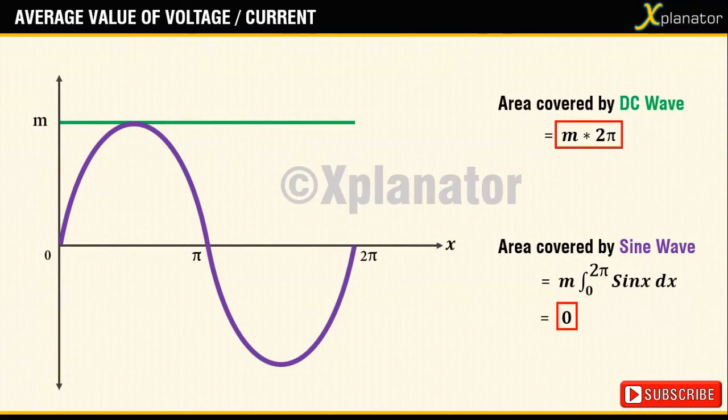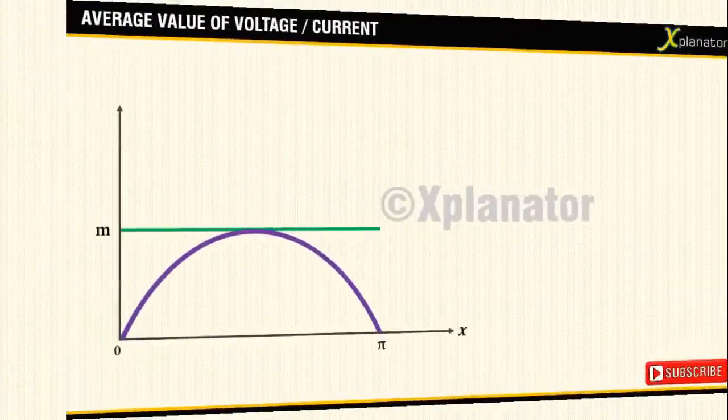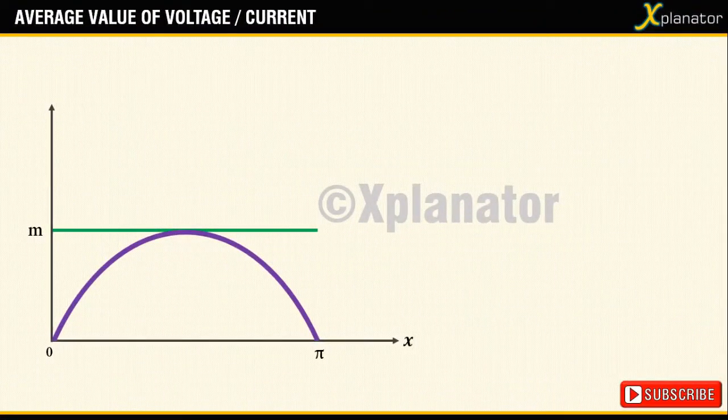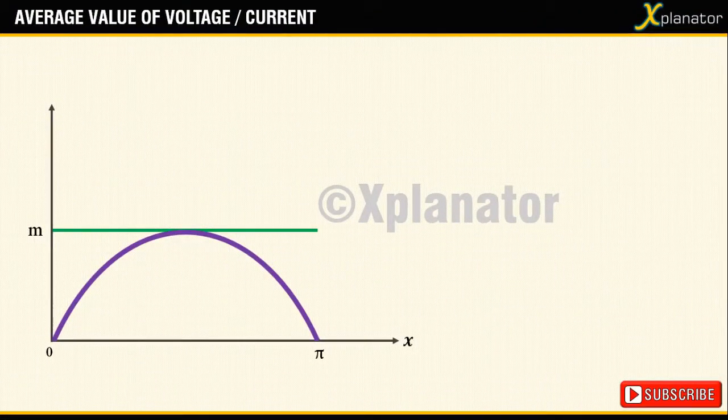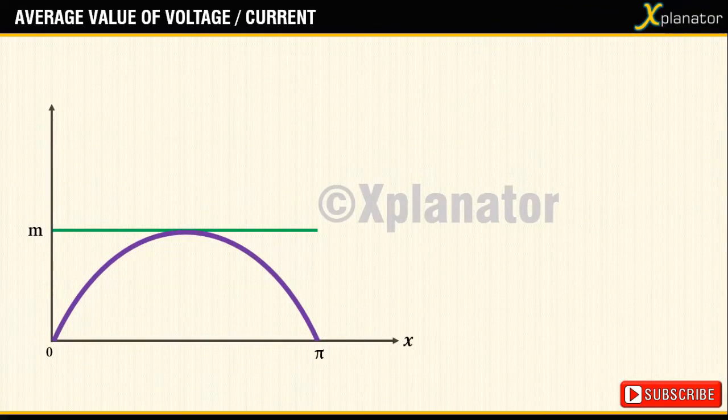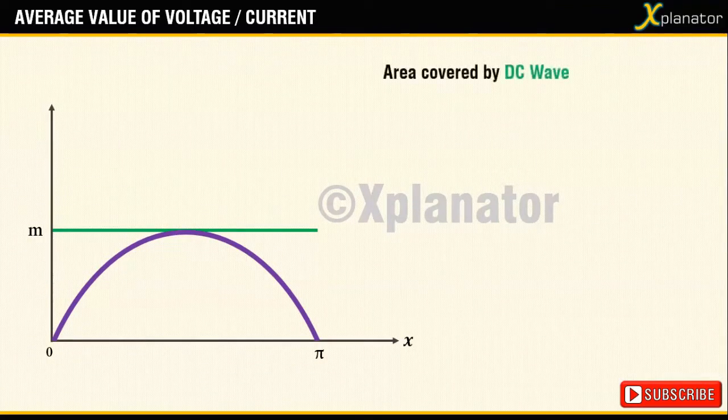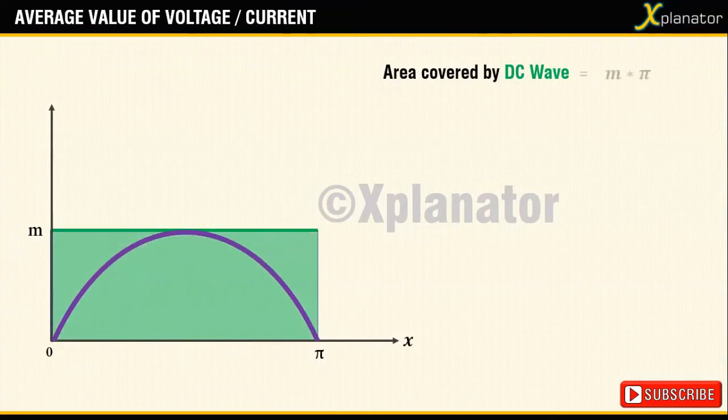Let us reduce the time period and consider only one half cycle, i.e. from 0 to pi. Take the signals again. Area occupied by the DC signal this time is going to be M x pi.